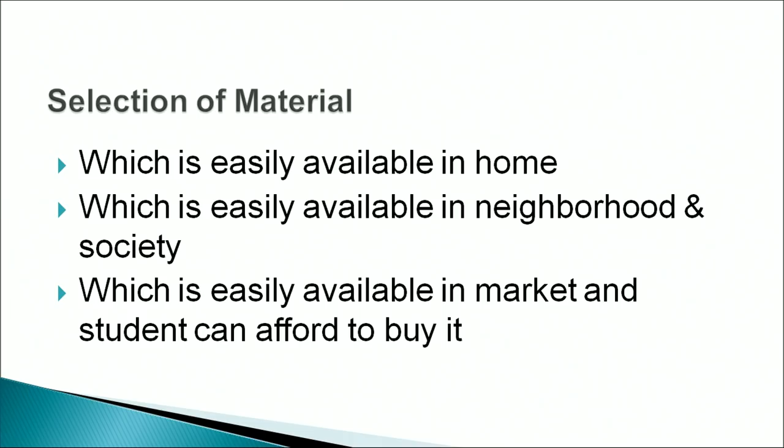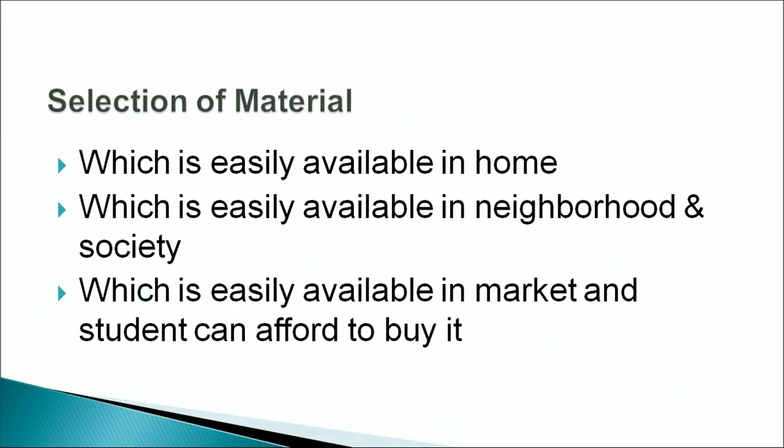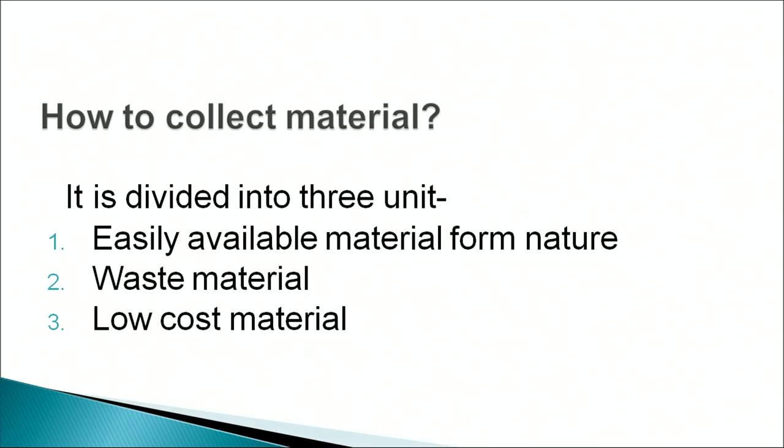In this we can include the material which is easily available at home. If the material is not easily available at home, we can go for material which is easily available in the neighborhood and society. And lastly, material which is easily available in the market and the student can afford to buy. So we can select the material for work education from these three: at home, neighborhood and society, and the market.